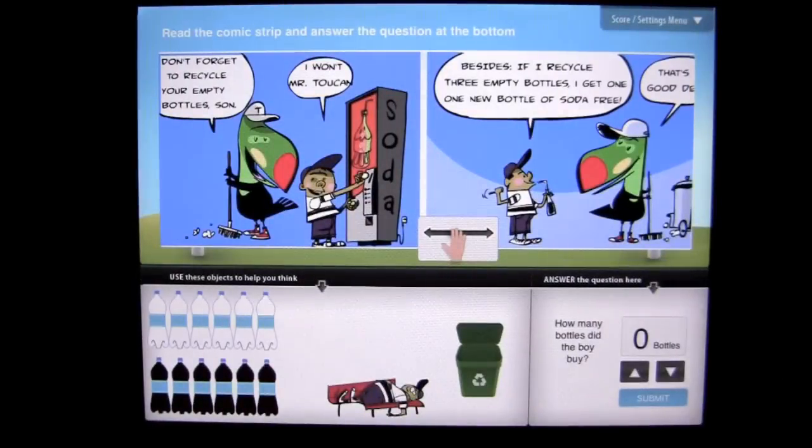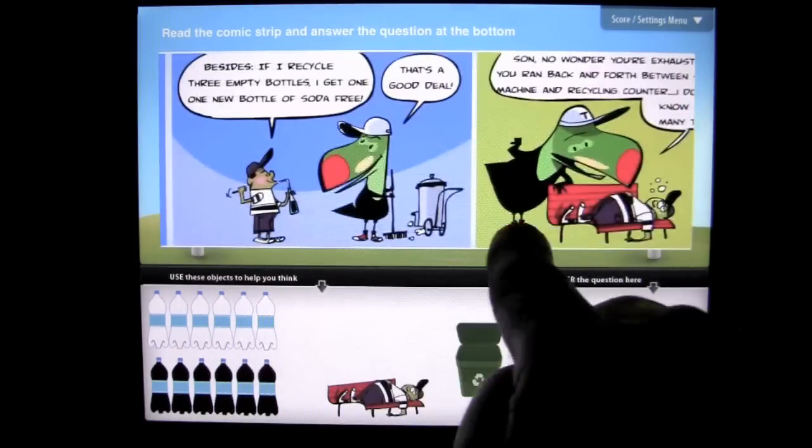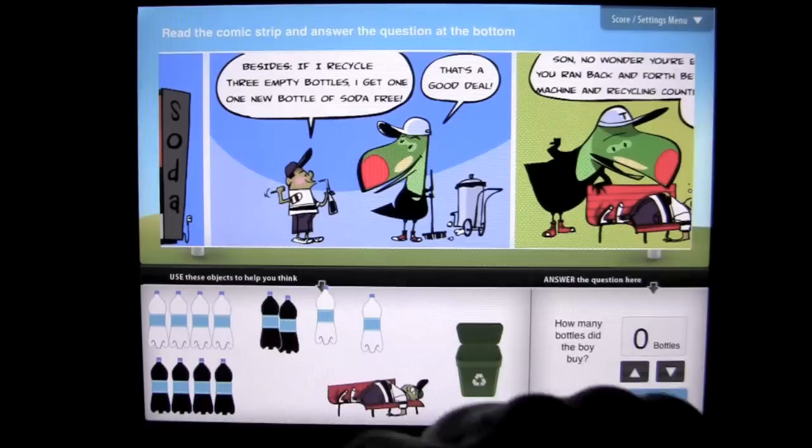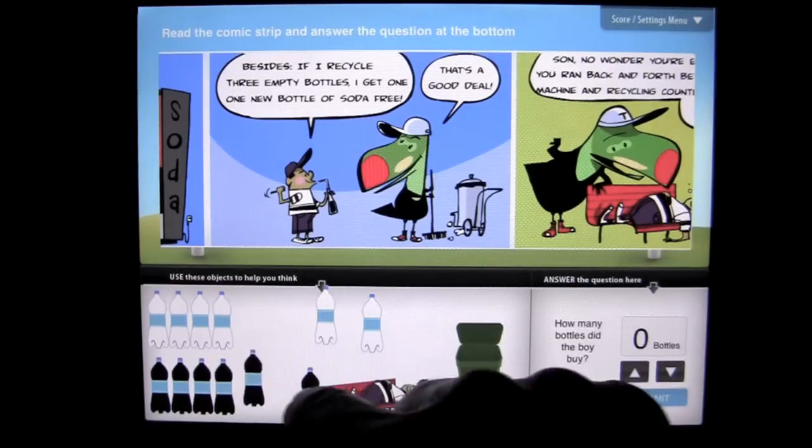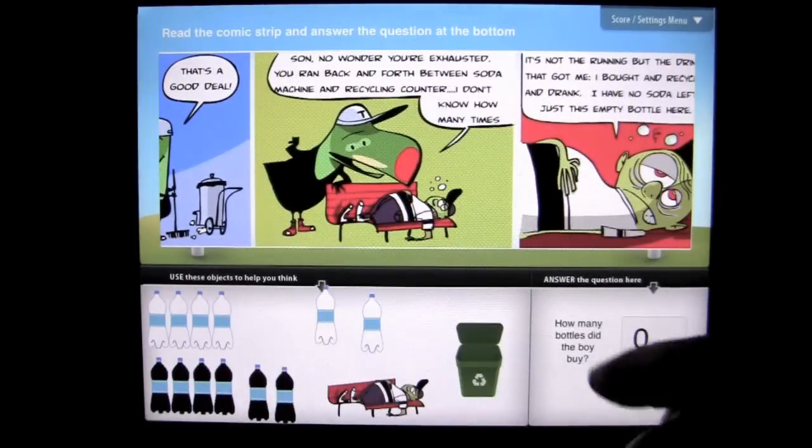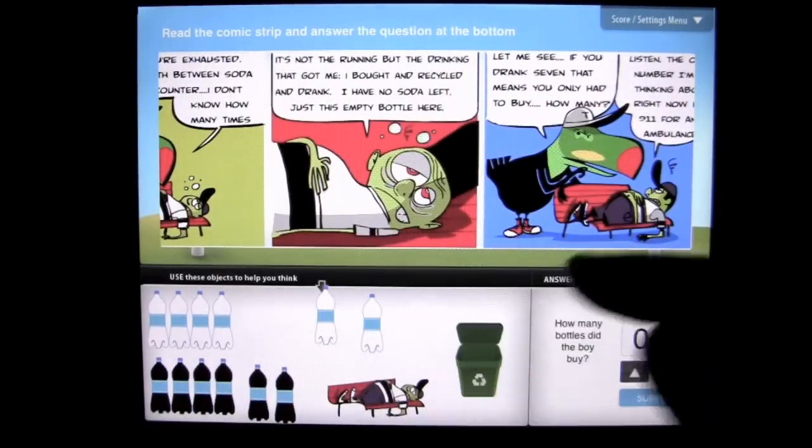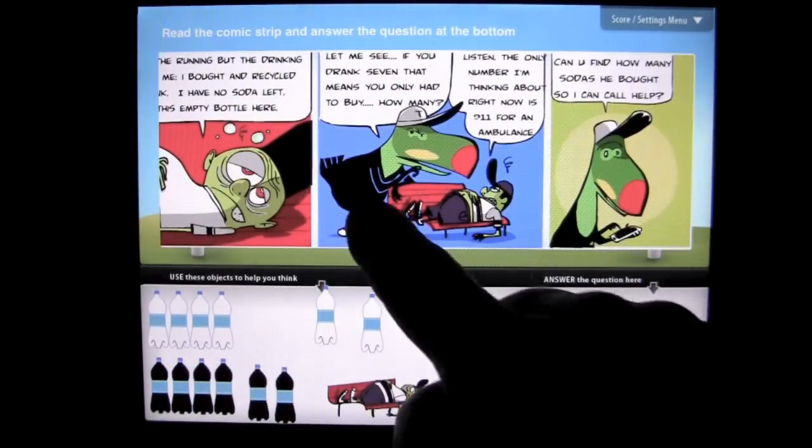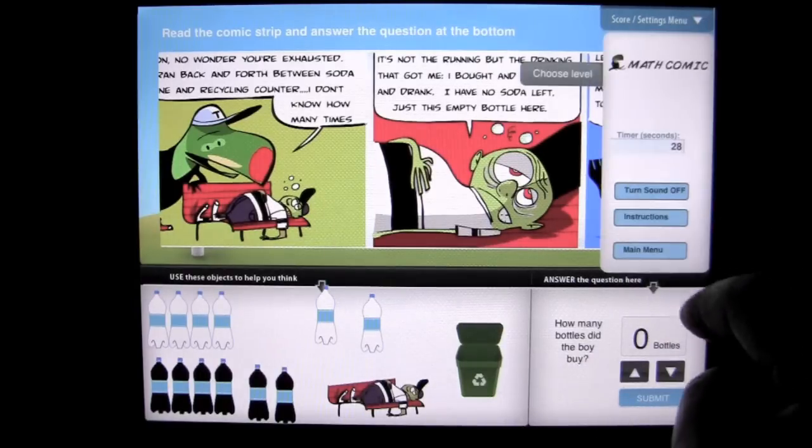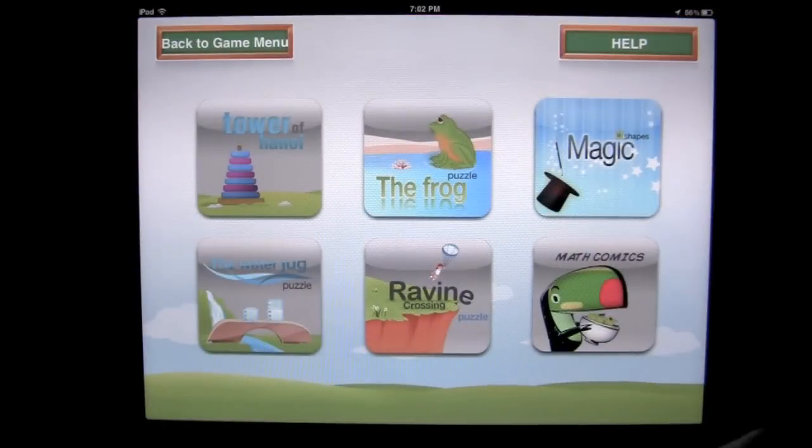We can go to the next level. Tap on here. And we're going to get another comic strip word problem. A rather enjoyable way to learn word problems. You can scroll through here. You also have the ability to use the items to help you to count. In this case, we have full soda bottles and empty soda bottles. And that's how this word problem rolls. This kid drank too much soda and so on. So you have to get the right answer here, which is how many bottles did the boy buy? We're going to go ahead and exit out of here and look at some of the other games.